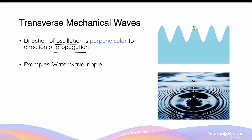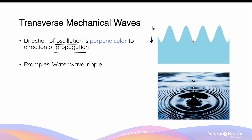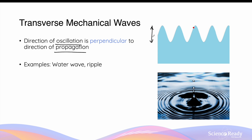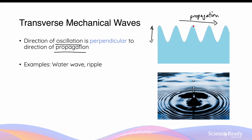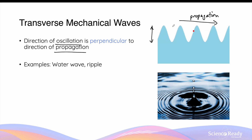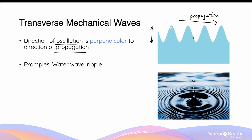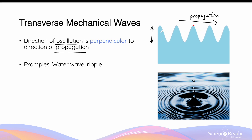For example, with this water wave, the red moving dot tracks the oscillation direction of this wave. As you can see, it's moving up and down — that vertical axis is the direction of oscillation. Visually, you can see from the animation that the wave itself is moving towards the right, and this is the direction of propagation. The direction of oscillation forms a 90-degree angle to the direction of propagation. This is why it's classified as a transverse mechanical wave — transverse because of the perpendicular relationship between propagation and oscillation, and mechanical because it requires water as a medium.